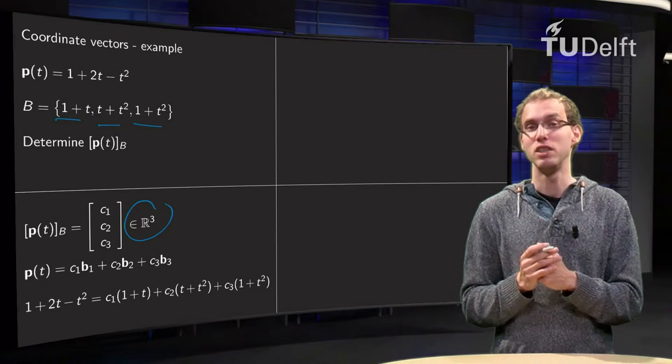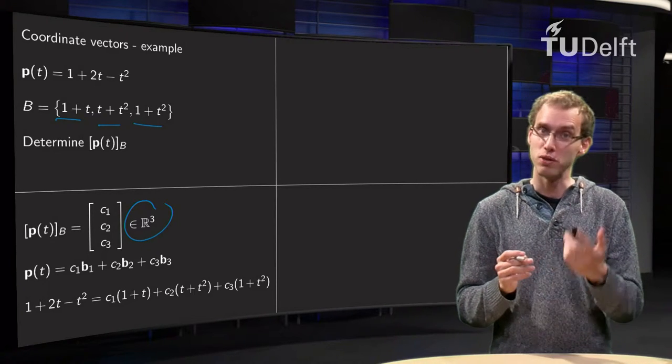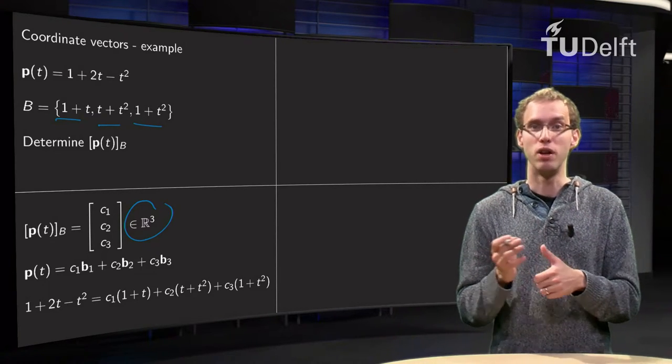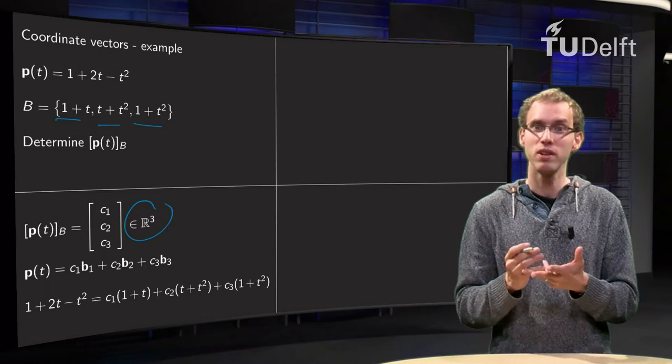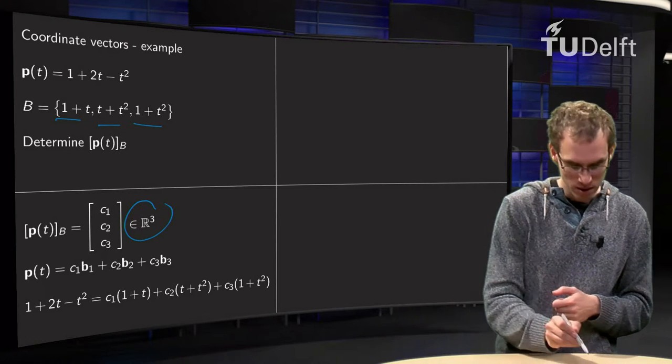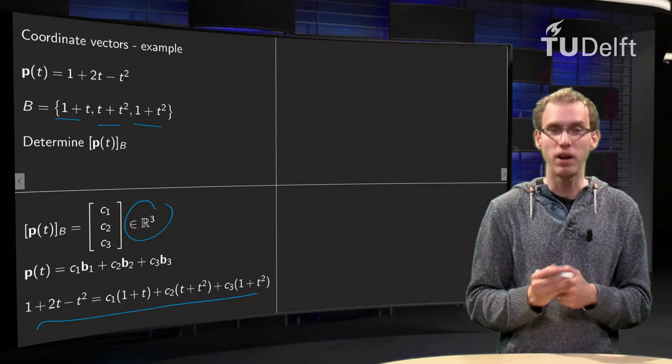So we can use this information to find our c1, c2, and c3 because we know p, we know b1, b2, b3. So we plug everything in, that's what we did over here.